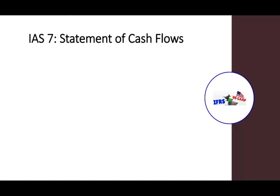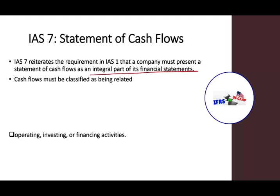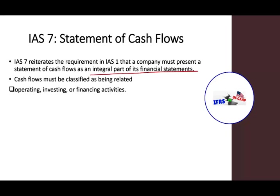IAS 7 is the Statement of Cash Flows. It reiterates the requirement in IAS 1 that says the company must present a Statement of Cash Flow as an integral part of the Financial Statements. The Cash Flow Statement must be classified as being related to operating, investing, and financing — the same as GAAP. Three sections, same under U.S. GAAP.